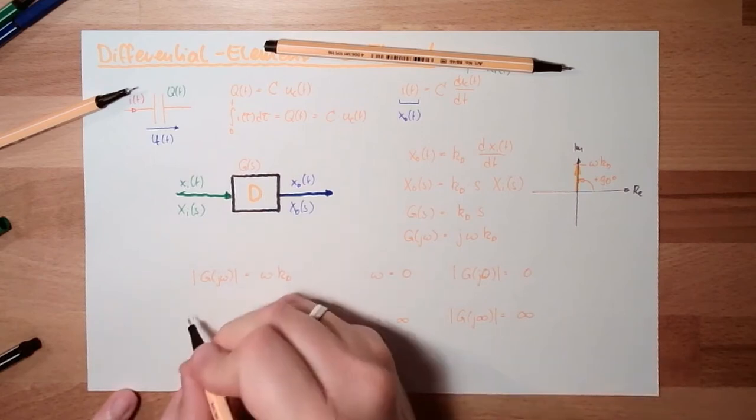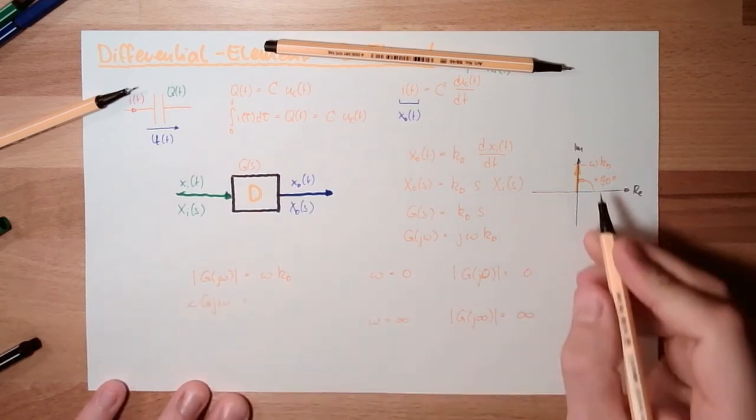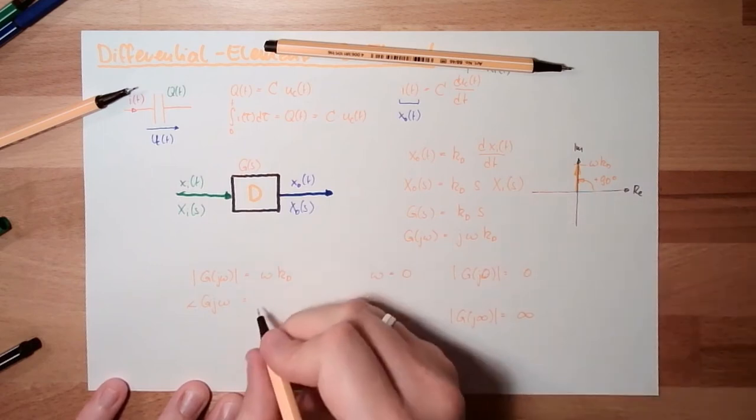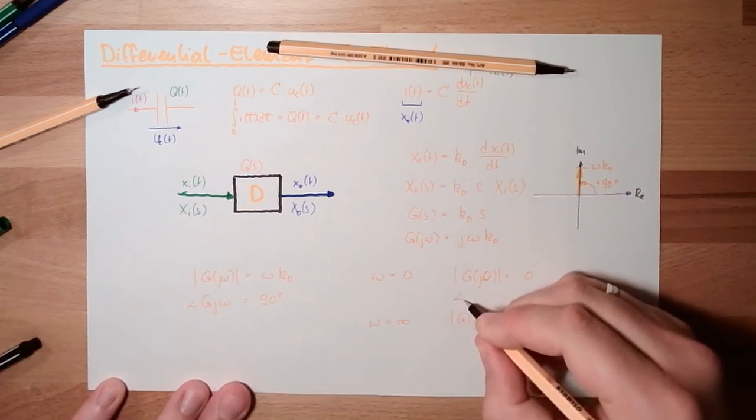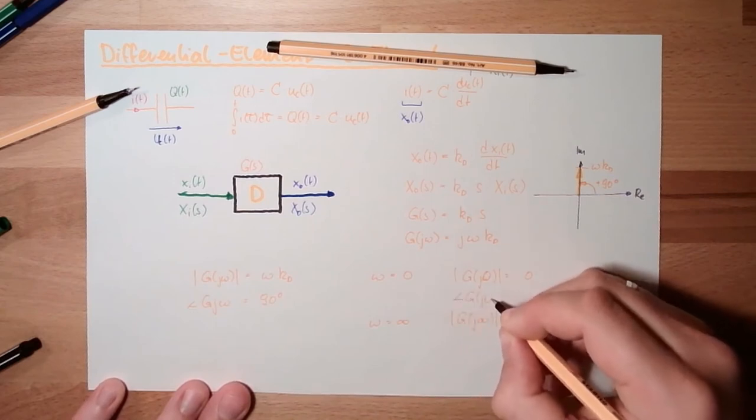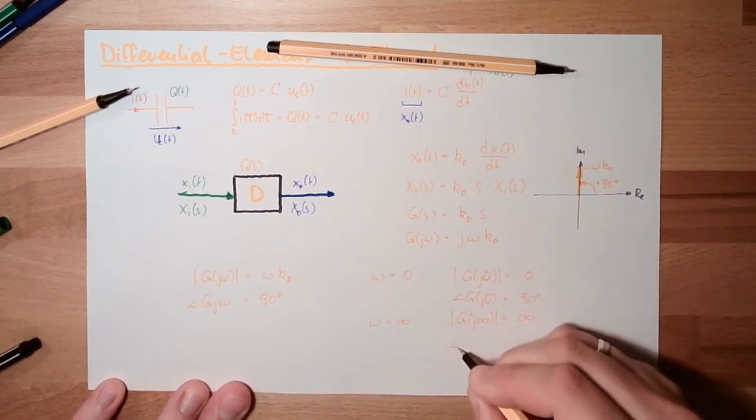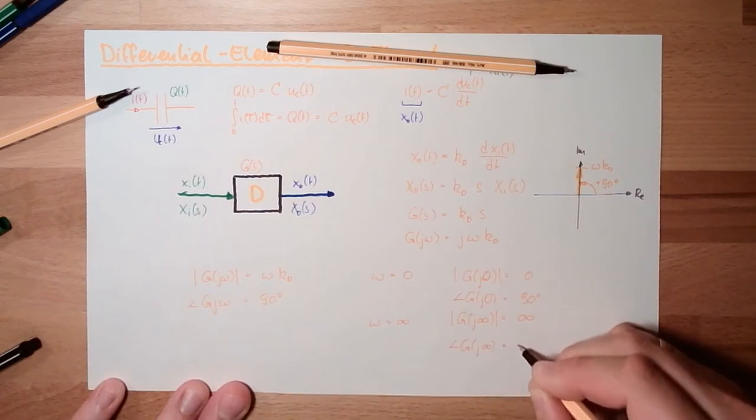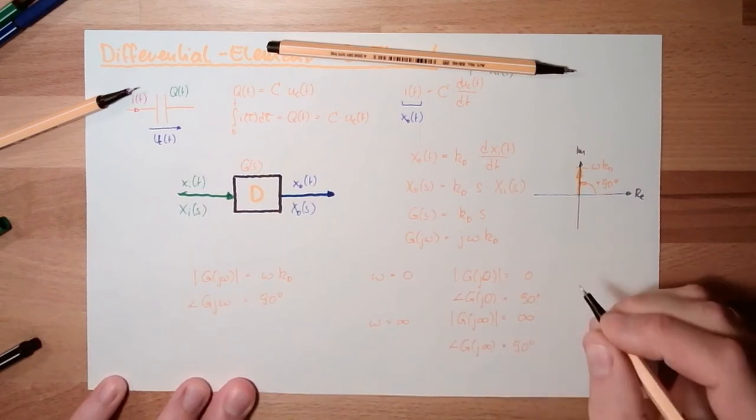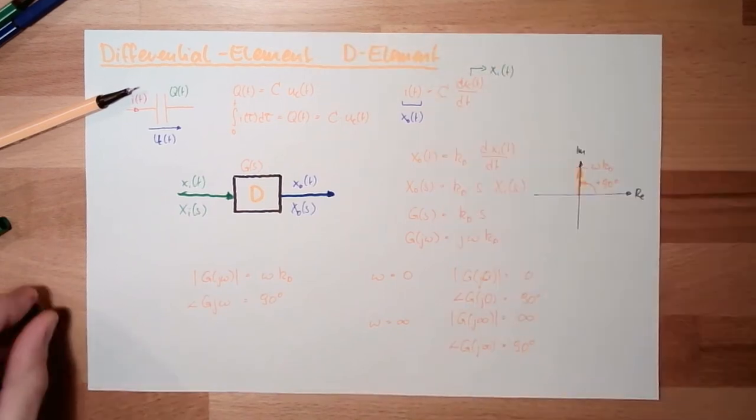And now the argument, we just thought about this, this is always 90 degrees. So the argument for G J zero is 90 degrees, and the argument from G J unlimited is still 90 degrees.